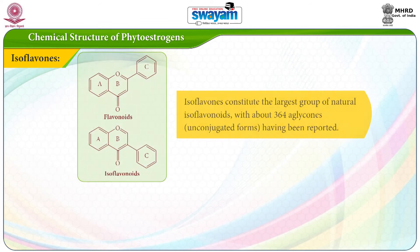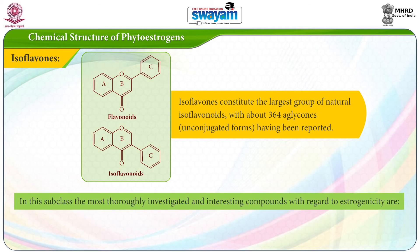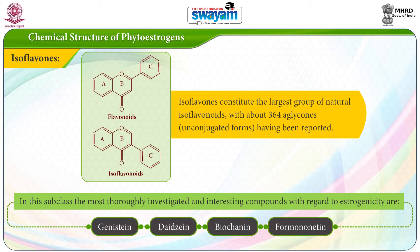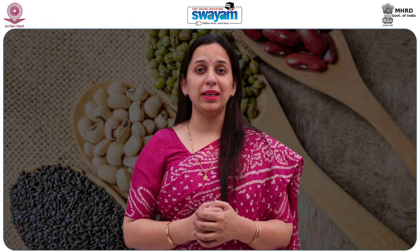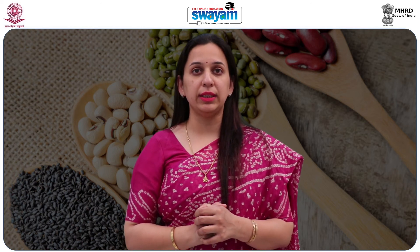Isoflavones constitute the largest group of natural isoflavonoids with about 364 aglycones in the unconjugated forms. The most thoroughly investigated and interesting compounds with regard to estrogenicity belong to this subclass. The scientific interest in these natural compounds was initiated by their deleterious hormonal action in grazing animals. The estrogenic activity of clover, one of the richest sources of phytoestrogens, was first described over 60 years ago, following the observation that sheep feeding on pastures containing clover demonstrated hyperestrogenization and infertility.